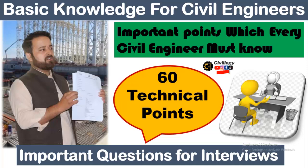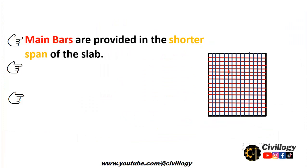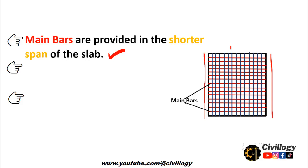Let's start our today's topic. First of all, what is a main bar? Main bars are those bars which are provided in the shorter span of the slab. In a one-way slab, load is transferred on the longer sides where beams are provided - beams are provided in these two directions. There are no beams on the other two sides in a one-way slab. So the main bar is provided in the shorter span, as you can see over here - these are the main bars which are mainly responsible for carrying the load.